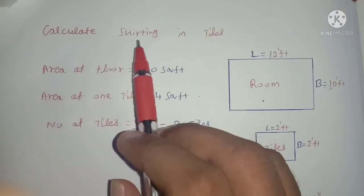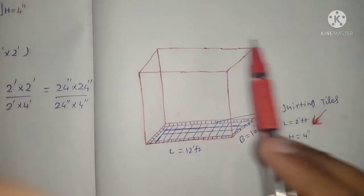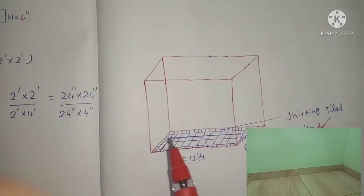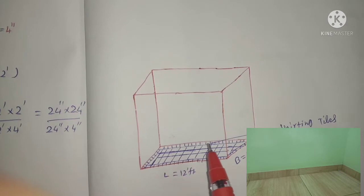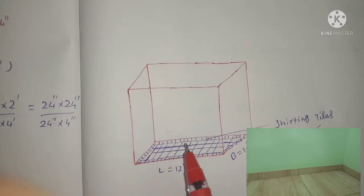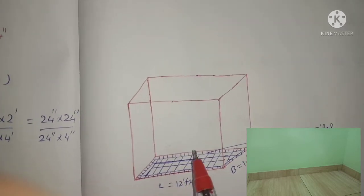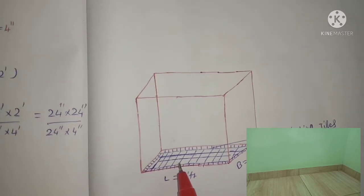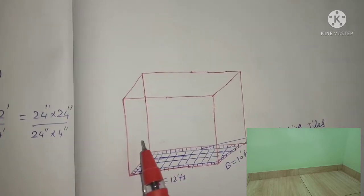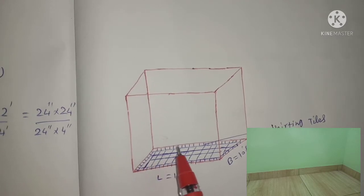Step 3: How to calculate skirting tiles. Skirting tiles are the tiles laid in the border between the interior wall and the floor. A board is provided by skirting tiles.